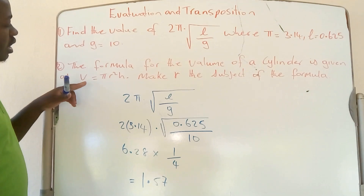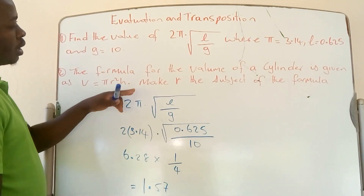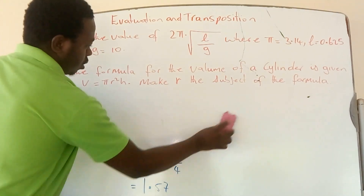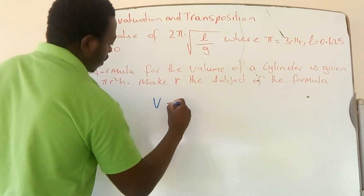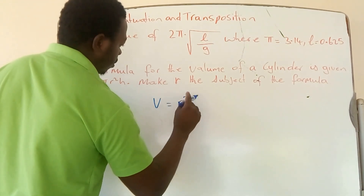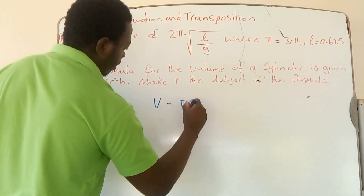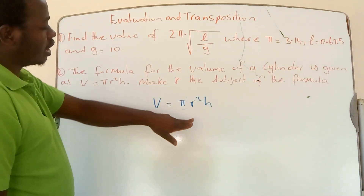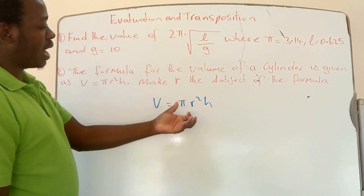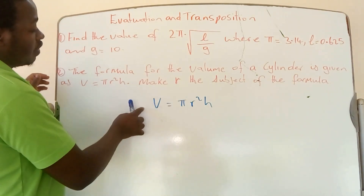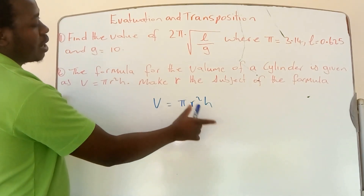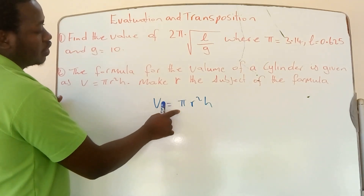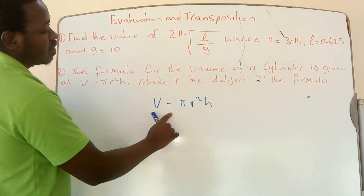The second question gives the formula for the volume of a cylinder: V equals π r squared h. They want us to make r the subject of the formula — in other words, transpose this formula to isolate r. Currently V is the subject, so we need to manipulate the equation to get r by itself. Notice that r squared is multiplied by both π and h.